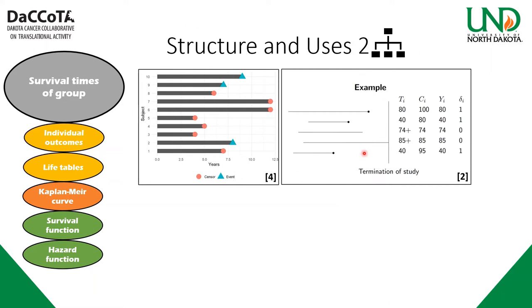Here's another simpler example. We have one, two, three, four, five subjects. One survived to the end of the study. One dropped out. And then three had events — three died.